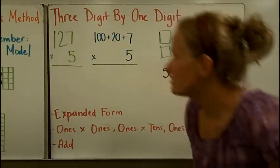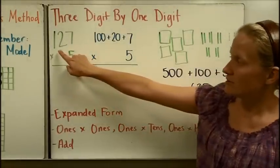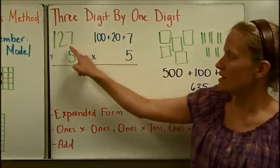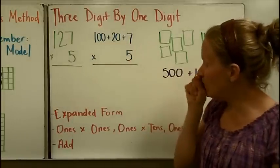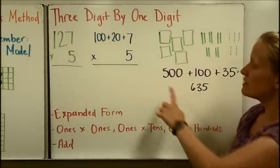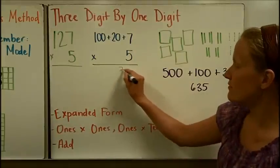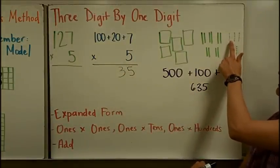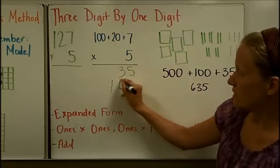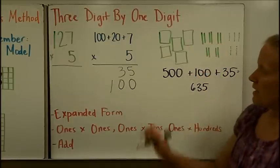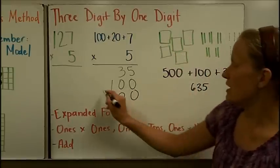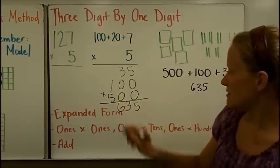Next we can use this with a harder problem: a three-digit by one-digit. You do the same thing — break the three-digit number into expanded form: one hundred plus twenty plus seven. Then multiply the five times each of those places. Five times seven is thirty-five. Five groups of twenty is one hundred. And five groups of one hundred is five hundred. Then add them together to get six hundred and thirty-five.